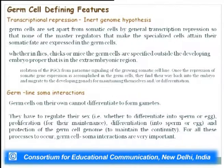Another defining feature is germline-soma interaction. Germ cells cannot differentiate into gametes on their own; they need somatic cell interactions to regulate their sex (sperm or egg), proliferation, differentiation, and protection of the germ cell genome. For all these processes, germ cell–soma interactions are essential. PGCs must migrate to the somatic gonads, which must set aside soma cells to associate with germ cells.